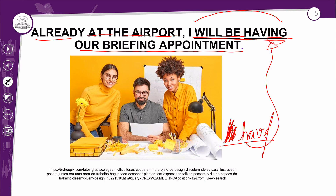'I will be having' — eu estarei tendo, eu estarei tendo uma briefing appointment. Aquela reuniãozinha básica que eles fazem lá. Até agora você está achando difícil a estrutura? Não — a estrutura continua a mesma. Da primeira para a segunda frase, o que mudou foi apenas o verbo com ING: 'having', que é o verbo 'ter'. Percebeu que a gente não vai trocar o 'be'? Ele fica fixo na frase.